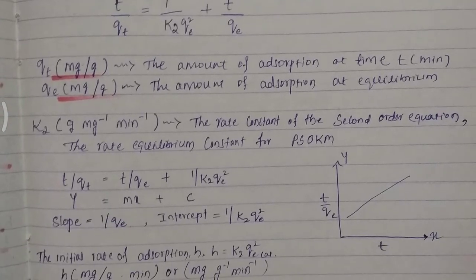Compare the equation with y = mx + c. Draw a graph of t/qe versus t, with t on the x-axis and t/qe on the y-axis. From that you can find the slope and intercept. The slope will be 1/qe, from which we can find qe. k2 can be found using the intercept value and qe value.